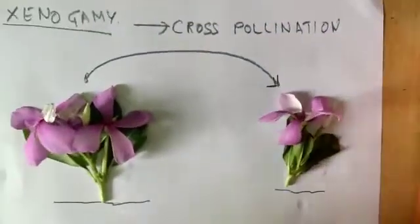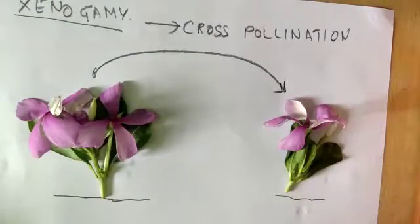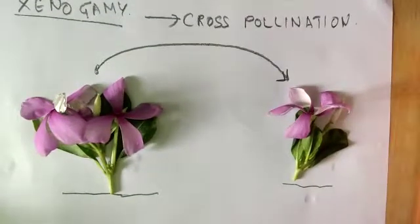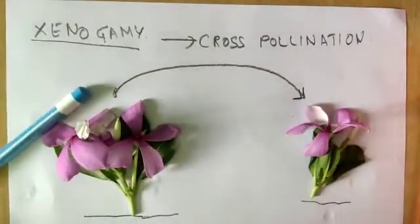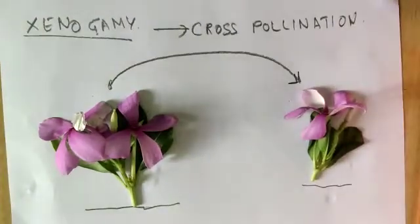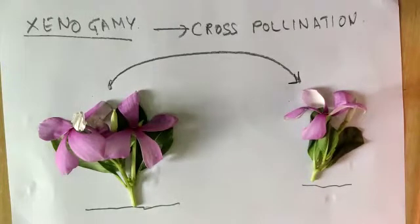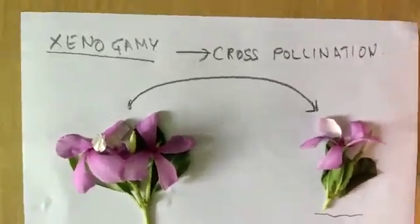There are certain methods by which plants prevent self-pollination, because due to self-pollination there are some inbreeding depressions that can occur. To prevent this, plants use methods like unisexuality, herkogamy, self-sterility, and other things. So that's all for today, thank you.